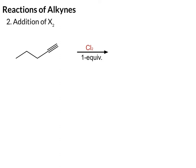The next reaction is a halogenation, where we add X2 across the triple bond. This could be Cl2, Br2, or I2. And because there are two pi bonds, we can do one equivalent or two equivalents of the halogen.